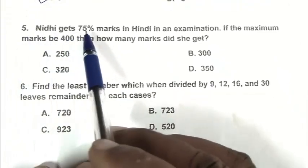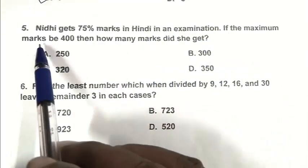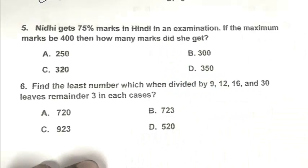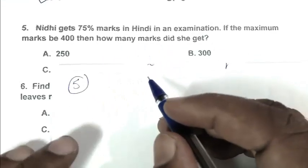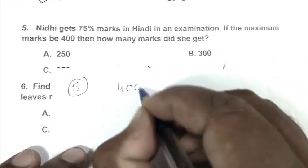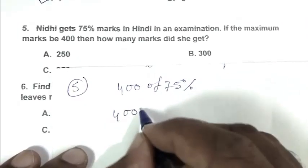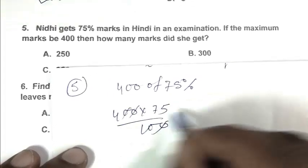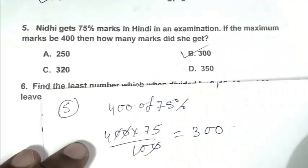Question number 5: Nidhi gets 75% marks in Hindi in an examination. If the maximum marks be 400, then how many marks did she get? We can calculate it simply: 400 of 75%, that is 400 multiplied by 75 upon 100, which is 300. So B is the right answer.